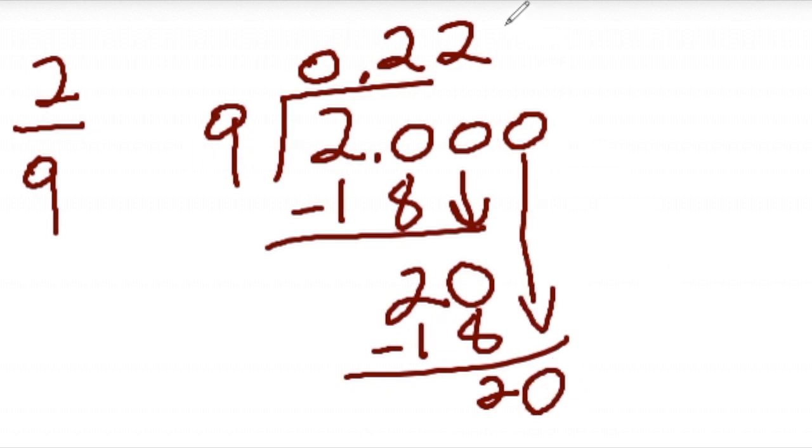Nine goes into 20 two times. Two times nine is going to be 18. So this 0.22222, it will go on forever. So the way we write that is the answer is 0.2 and we put a bar on top of the two. And that means that bar, that two repeats forever.